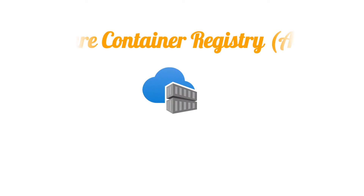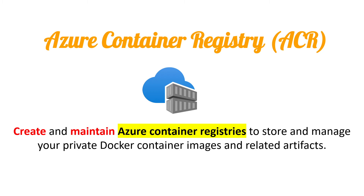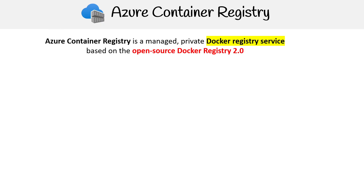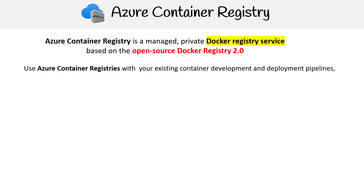Hey, this is Andrew Brown from ExamPro. We're looking at Azure Container Registry, also known as ACR, which creates and maintains Azure container registries to store and manage your private Docker container images and related artifacts. Azure Container Registry is a managed private Docker registry service based on the open-source Docker Registry 2.0. You can use container registries with your existing container development deployment pipelines, and it also has registry tasks to build container images in Azure.